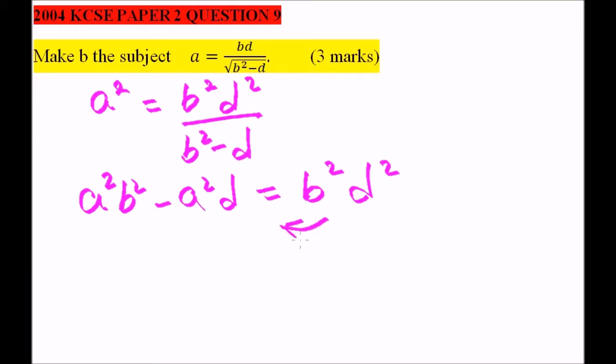Let's take b squared d squared to this side. A squared b squared minus b squared d squared is equals to, this becomes positive, so it is a squared d.